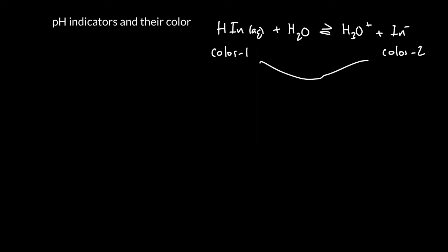And whenever you've got both of these present you have what you call a buffer and we know that the pH of a buffer is equal to the pKa of the acid plus the log of this ratio.